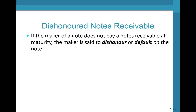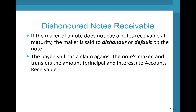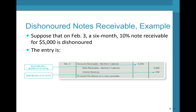A dishonored note. If the maker of a note does not pay at maturity, the maker is said to dishonor or default on the note. The payee still has a claim and transfers both principal and interest to AR. Suppose a six-month, 10% note receivable for $5,000 is dishonored: debit AR — Northern Cabinets — $5,250; credit note receivable $5,000; and credit interest revenue $250 (= $5,000 × 10% × 6/12).